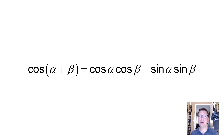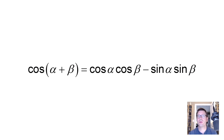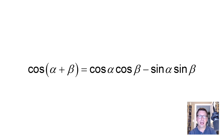The beauty of it is once we know the cosine addition formula we can then use it to algebraically derive some other important compound angle formulas, such as the cosine subtraction formula and the addition and subtraction formulas for sine and tan. I'll put a link in the description for a document that will show you those algebraic derivations. But for now we're going to take a geometric approach to deriving the cosine addition formula. So let's get started.